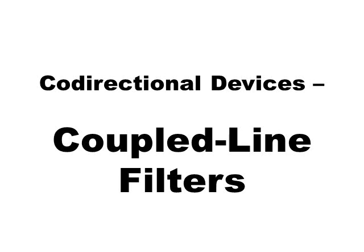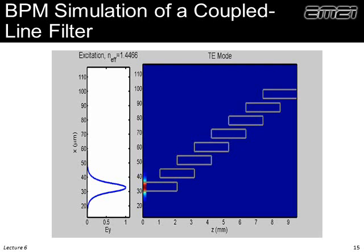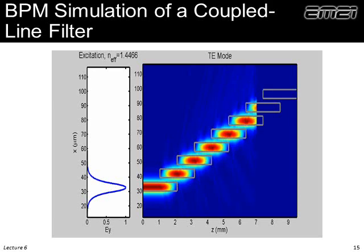The next co-directional device is the coupled line filter. A movie of the concept — modeled using the beam propagation method — shows a wave injected from the left coupling into the next waveguide. We've spaced this so that the spacing is perfect, coupling nearly 100% of the energy into the adjacent waveguide with minimal scattering, giving essentially 100% transmission through the device. If we inject a frequency or wavelength that doesn't match that condition, we get much more scattering and not 100% transmission — so this is a bandpass filter.